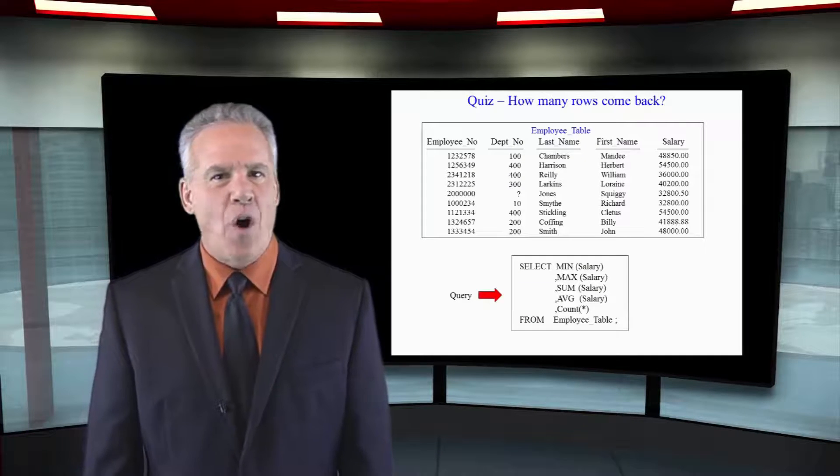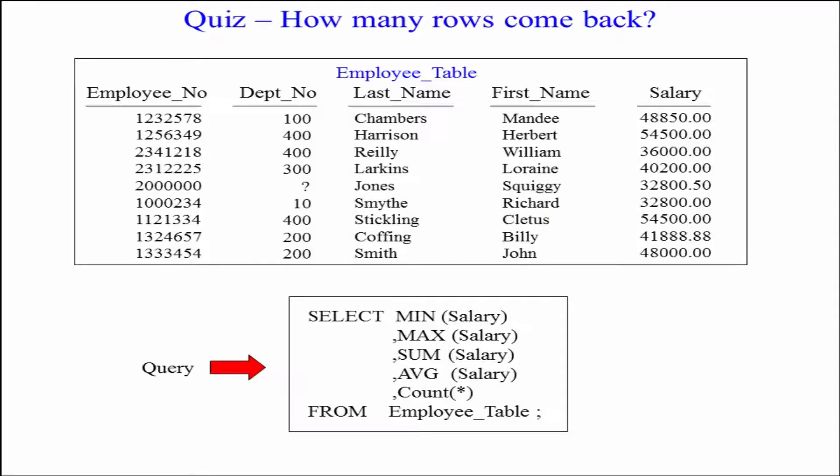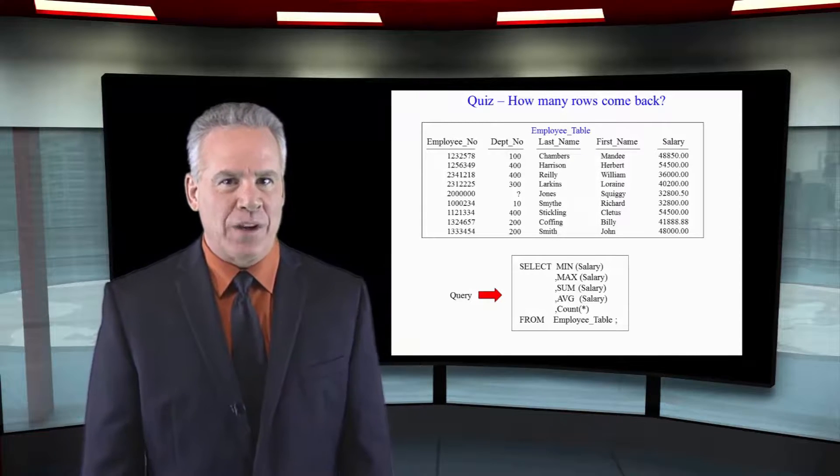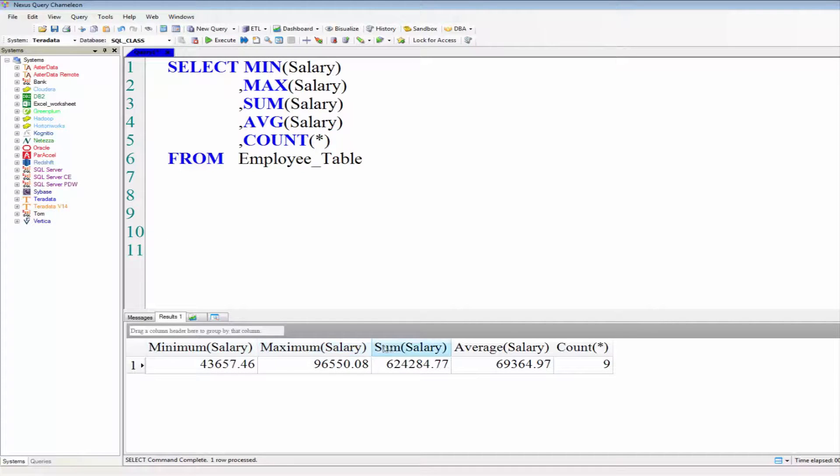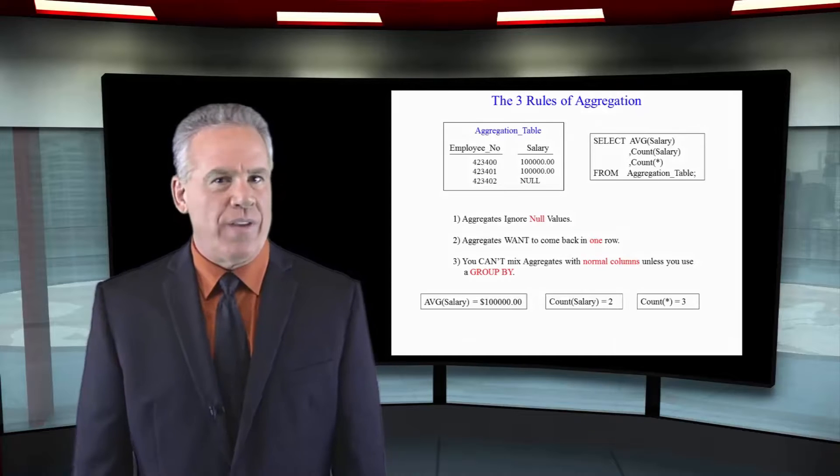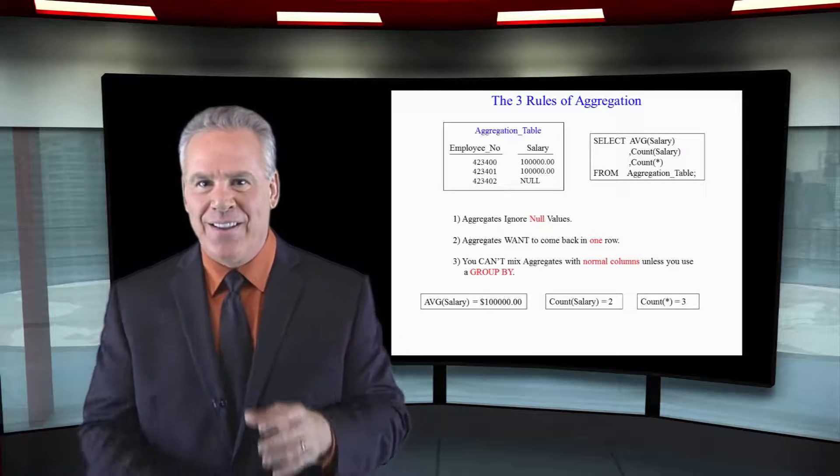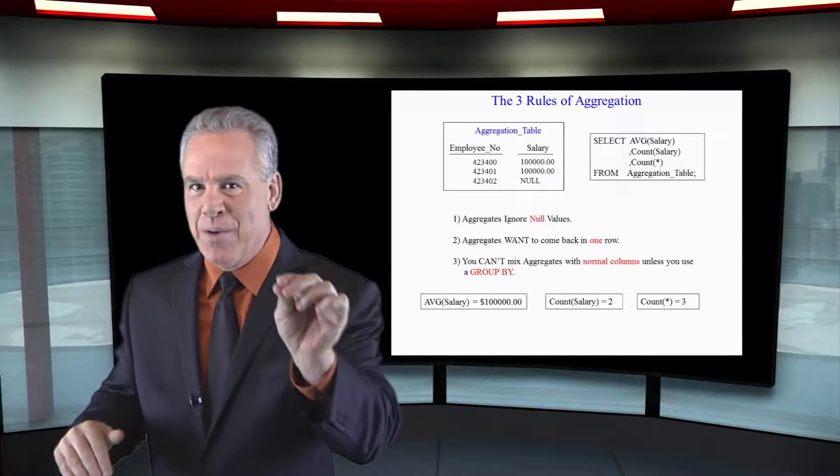Here is an example of all five aggregates in a query. We're going to select min salary, max salary, sum salary, average salary, and a count of asterisk from our employee table. Question for you: how many columns are coming back? How many rows? We had five columns come back, and again, we had one row come back. Now, we've had two rules so far: aggregates ignore null values, and they're designed to come back in one row. We're going to see something new coming up.